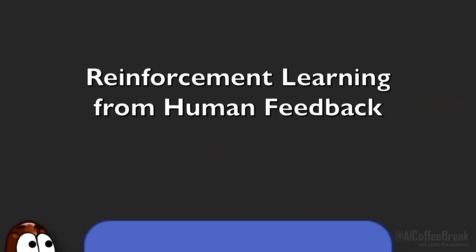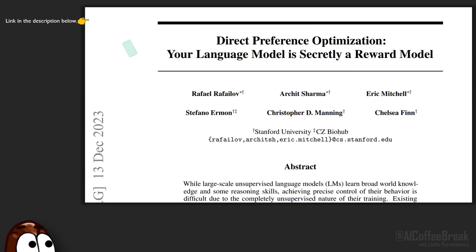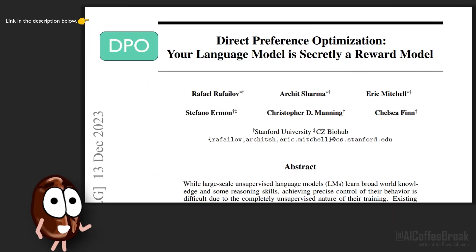Hello! Today we talk about fine-tuning language models to turn them into chatbots, or to make them say appropriate things and discourage them from unwanted outputs. Usually this is done with reinforcement learning from human feedback, but this new method called Direct Preference Optimization, or DPO, shows how to fine-tune from human feedback without reinforcement learning, as reinforcement learning is relatively costly, complicated, and unstable in training.